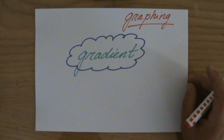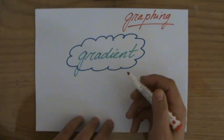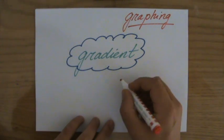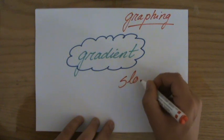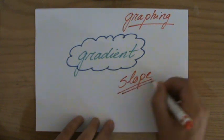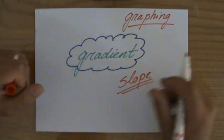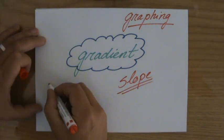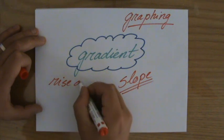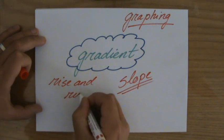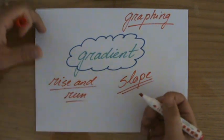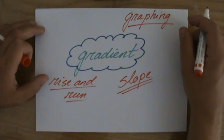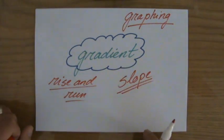But maybe you have learned a different word for gradient. Maybe you say, hang on a minute, in my school we talk about the slope. No, that's excellent. Different words, they mean the same. But maybe you say, we talk about the rise and run. Fantastic. You keep on talking about rise and run. It all means to say it is the gradient.